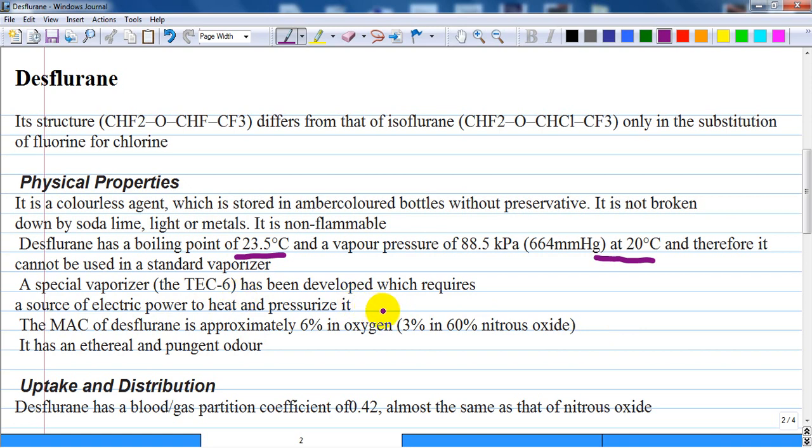which requires a source of electric power for heating and pressurizing. The minimum alveolar concentration of desflurane is approximately 6% in oxygen and 3% in 60% nitrous oxide. As with all volatile agents, minimum alveolar concentration is higher in children compared to adults, and it is around 9-10% in neonates especially.